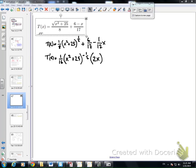Now I multiply by 2x. Remember, that is the chain rule. The derivative of x squared plus 25 is 2x. And the derivative of 6/17, that's a constant, so that's going to be zero. And the derivative of negative 1/17 x, well that's right here, negative 1/17.